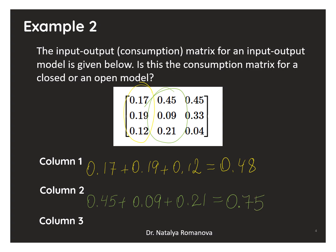The second column sum equals 0.45 plus 0.09 plus 0.21 equals 0.75. The third column, sum of elements 0.45 plus 0.33 plus 0.04 equals 0.82.